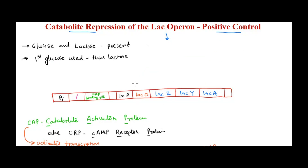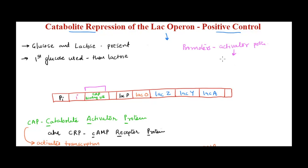This is our lac operon. We had seen three structural genes, operator, promoter, and inhibitor gene with its promoter. What we did not see in the last video is the activator protein binding site. Certain promoters need the presence of an activator protein, and since it's a protein, there has to be an activator protein binding site — generally very close to the promoter. The activator protein will bind to the activator protein binding site on DNA, and its function, as the name suggests, is to enhance the process of transcription.